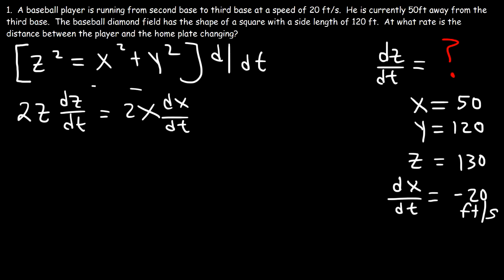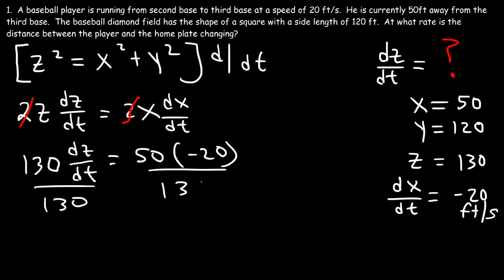So we have this expression. Now let's divide both sides by 2. And let's replace z with 130 and x with 50. And dx/dt is negative 20. So let's divide both sides by 130. The first thing we could do is cancel a 0. And so we have 50 times negative 2, which is negative 100 divided by 13.